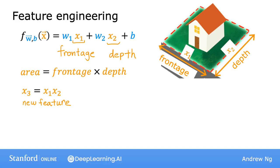With this feature, you can then have a model f_wb of x equals w1 x1 plus w2 x2 plus w3 x3 plus b, so that the model can now choose parameters w1, w2, and w3, depending on whether the data shows that the frontage or the depth or the area x3 of the lot turns out to be the most important thing for predicting the price of the house.